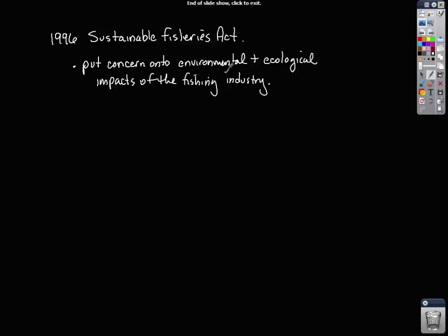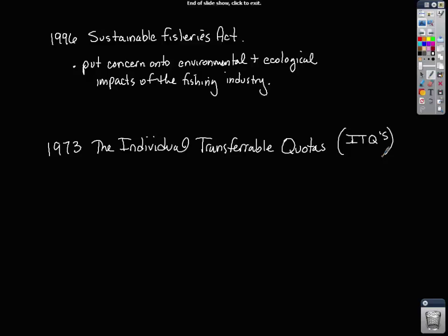The other thing — a little earlier, in 1973 — was called the Individual Transferable Quota, or ITQs. Before each salmon season, fishing managers can establish, based on their knowledge, what the maximum sustainable yield is: how many fish can you catch without hurting the ecosystem?